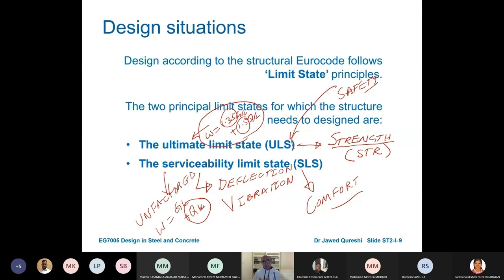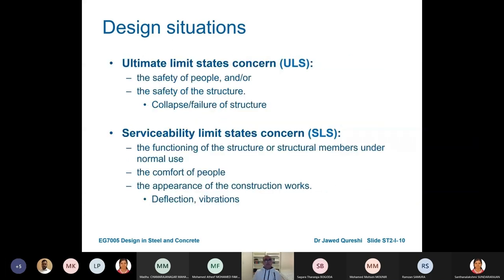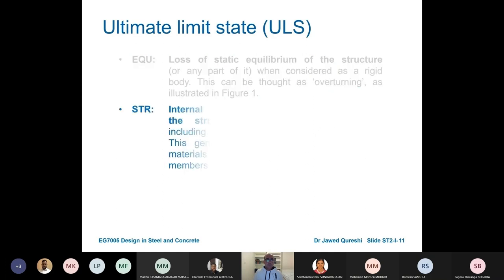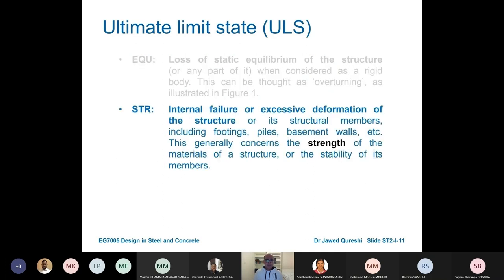Ultimate Limit State is related to safety of people, safety of structure, and collapse or failure of the structure. Serviceability is related with the use of the structure, the comfort of people, the appearance of construction, and vibrations and deflections. The different Ultimate Limit States are EQU — loss of equilibrium — and STR — strength. In structural engineering you will mainly be concerned with the strength limit state.